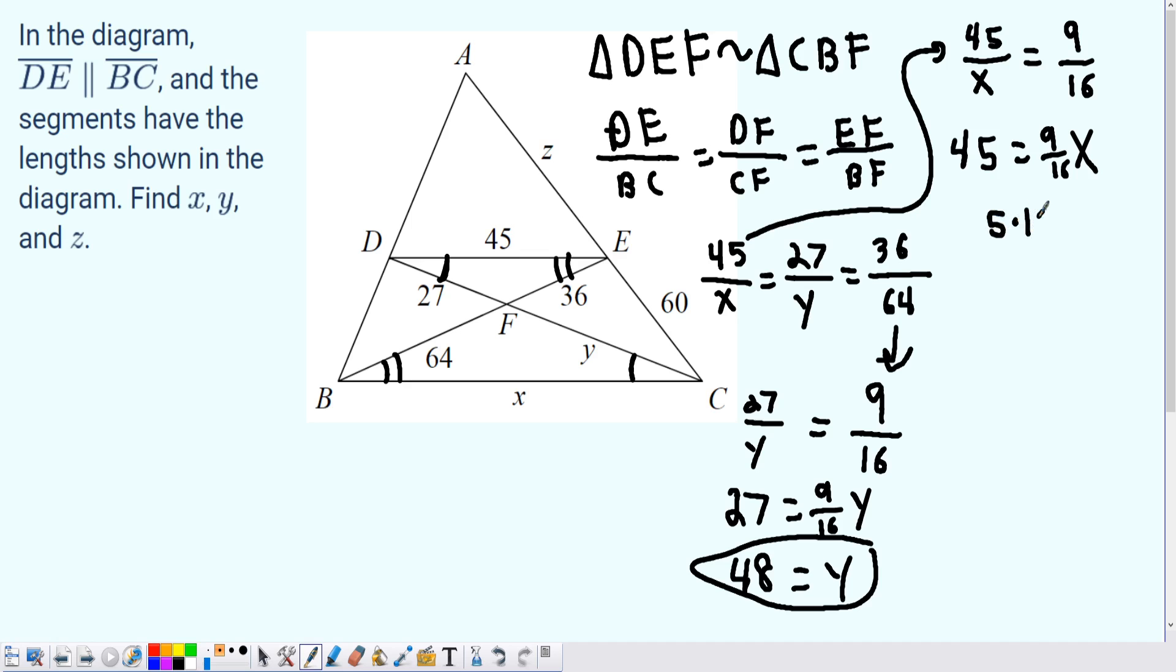So we have 5 times 16 equals x. That's multiplying the 16 over and dividing the 9. And from there, we get that x is equal to 80.